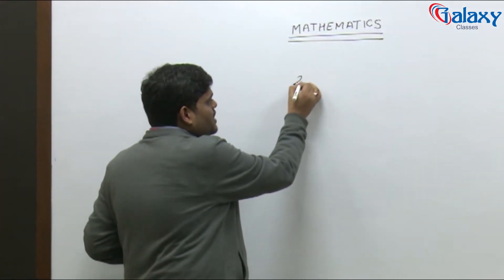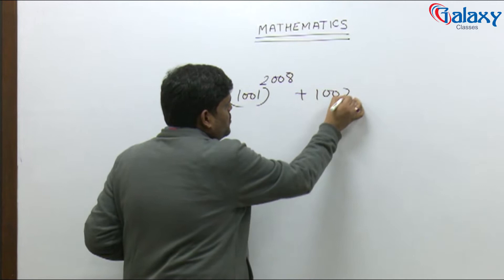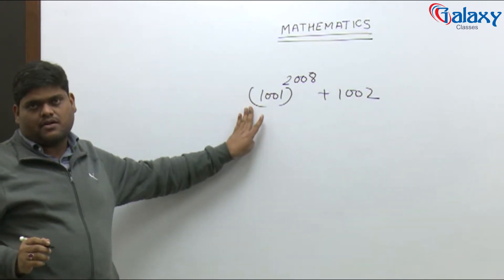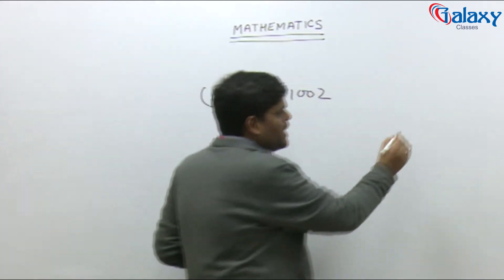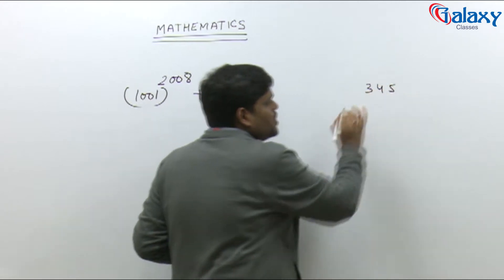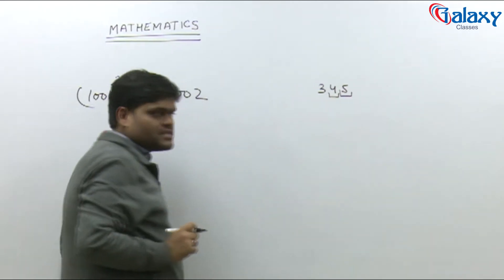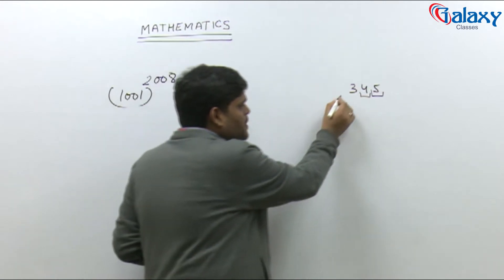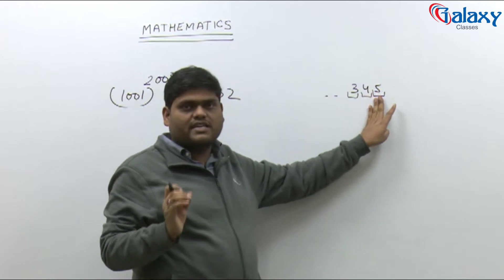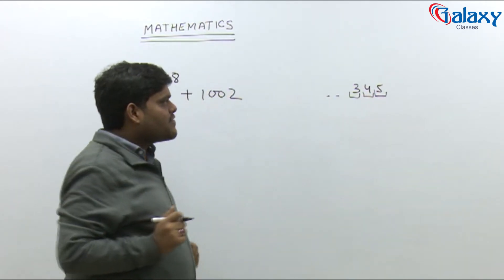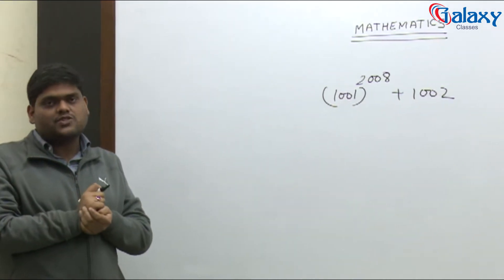Suppose a question is given like this: what will be the digit at the unit place? First, we have to understand what 'unit place' means. If a number is 345, then 5 is at the unit place, 4 is at the 10th place, and 3 is at the 100th place. Any digit starting from the right-hand side, the first one is called the unit place digit.